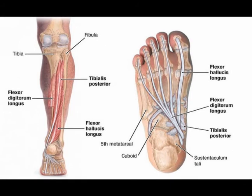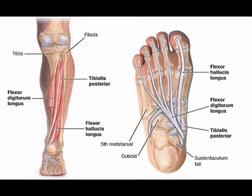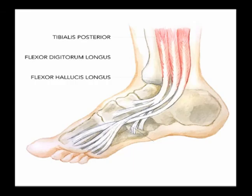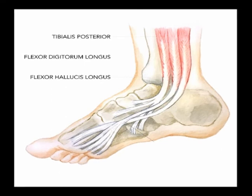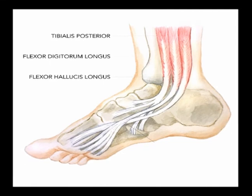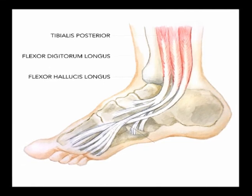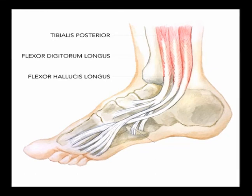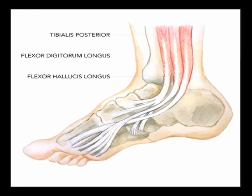So again, the origin of the flexor hallucis longus muscle is on the posterior aspect of the fibula, and its tendon attaches to the plantar part — the bottom — of the distal phalange of the great toe. Its concentric action is great toe flexion, and it is innervated by the tibial nerve.